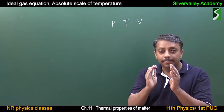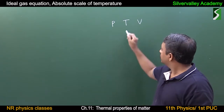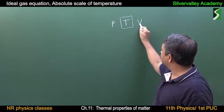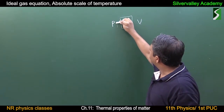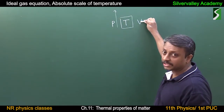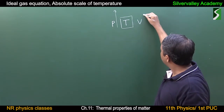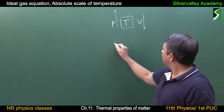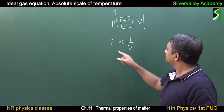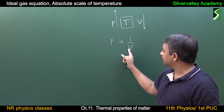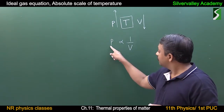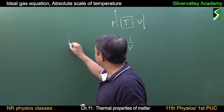That is why we keep one variable constant. Keep temperature constant and concentrate on pressure and volume. Increase pressure and see how volume changes. With the increase in pressure, volume decreases. So pressure and volume are inversely proportional — that is true at constant temperature. This law is called Boyle's law.